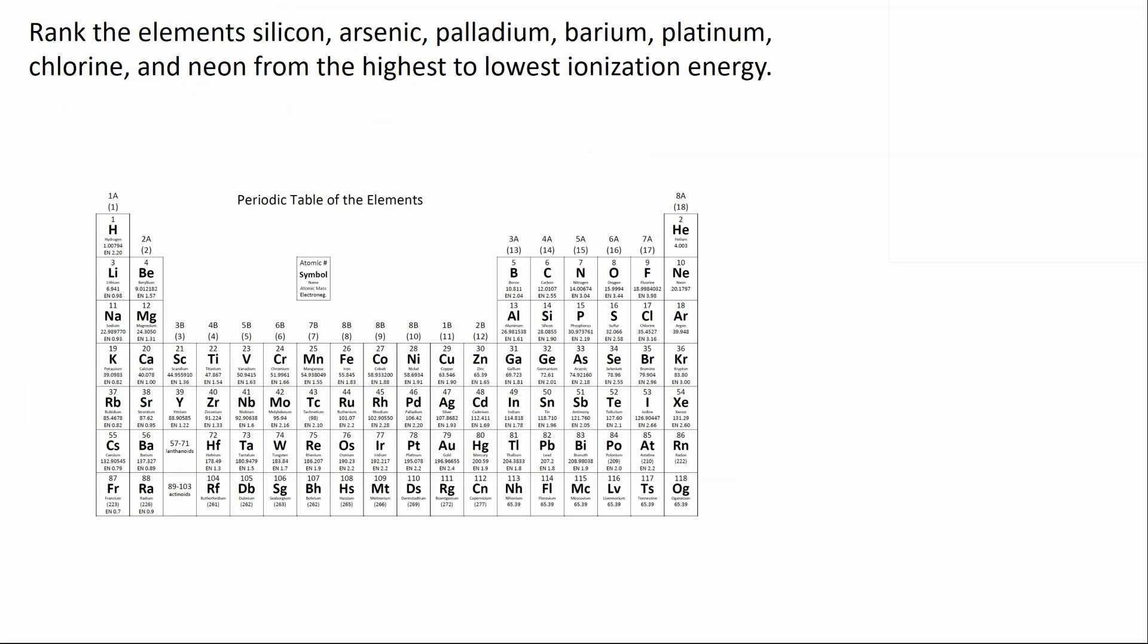All right, so types of problems you might see on exams or homework are often how do we rank or compare. Sometimes it's just two. In this problem, we're given a number. And what I'd suggest that you start with on these problems is figure out which property you're looking at. And it says highest to lowest. So I'm going to put my high ionization energy first. And I'm going to go to my low ionization energy. Then identify where the elements are. So there's silicon. There's arsenic. Palladium. Barium. Platinum. Chlorine. And neon.